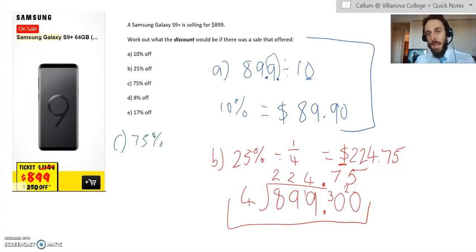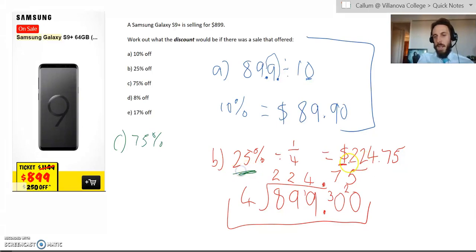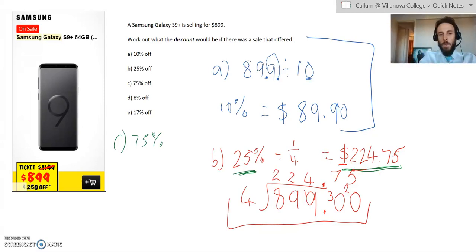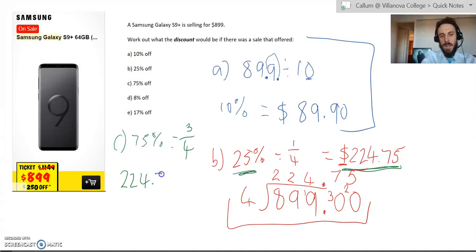To work out 75%, what we would do is we know that 25% is $224.75. And we worked that out by dividing by four. So what we can do, we know that 75% is equal to three quarters. We know that one quarter is $224.75. So we can take that number, multiply that by three to give us our three quarters, and we should have the answer. So three fives are 15, carry the one. Three sevens are 21, add the two is 22. Three times four is 12, add two is 14, carry the one. Three times two is six, and one is seven, and three times two is six. So I've just worked out that 75% is $674.25.